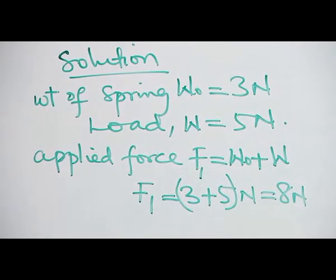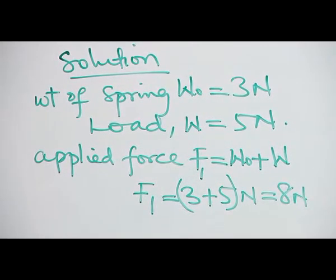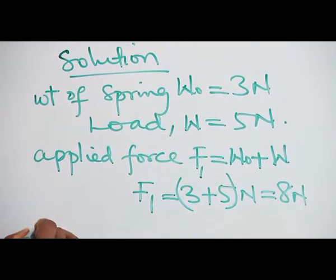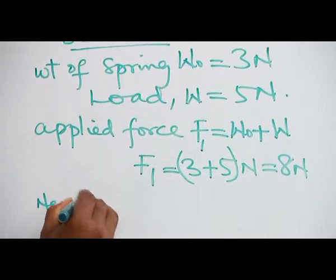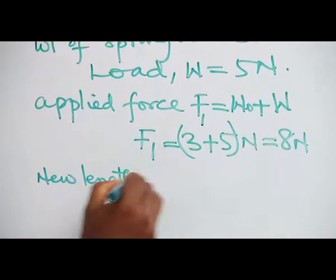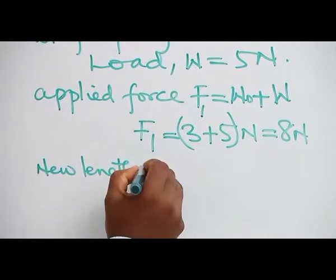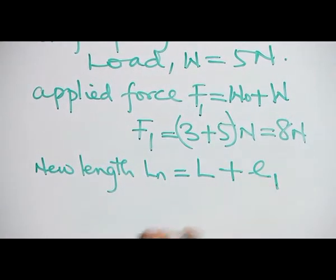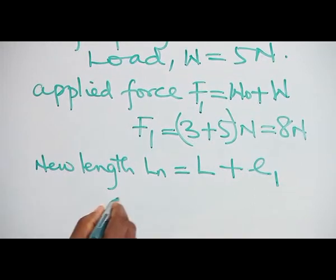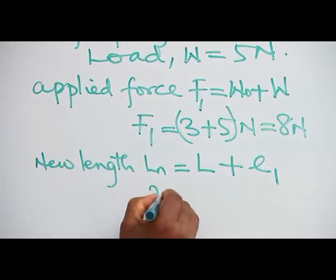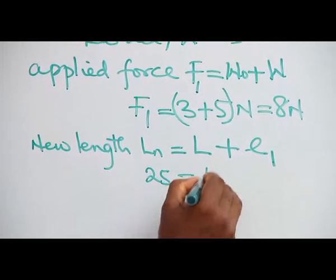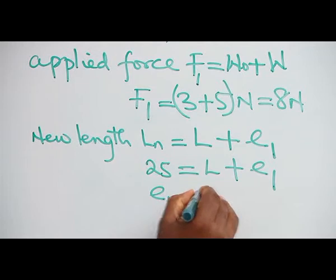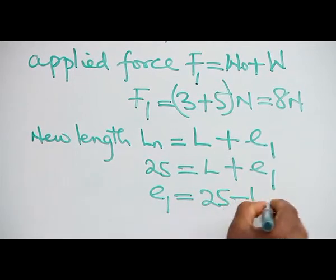And the total length or the new length after it was loaded is 5 N. So new length or the extended length is the natural length plus the extension. And we are told that this new length is 25, so natural length plus extension E1 equals 25, giving us E1 equals 25 minus L.